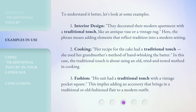In cooking: her recipe for the cake had a traditional touch — she used her grandmother's method of hand-whisking the batter. In this case, the traditional touch is about using an old, tried-and-tested method in cooking. In fashion: his suit had a traditional touch with a vintage pocket square. This implies adding an accessory that brings in a traditional or old-fashioned flair to a modern outfit.